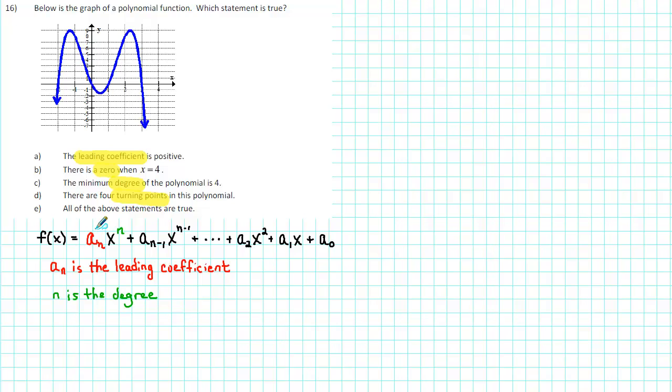In order to determine whether the leading coefficient is positive or negative, we can look at the right end behavior of the graph. At the right end of the graph, we see that the y values are decreasing without boundary as x increases without boundary. Symbolically, we write f of x goes to minus infinity as x goes to infinity.